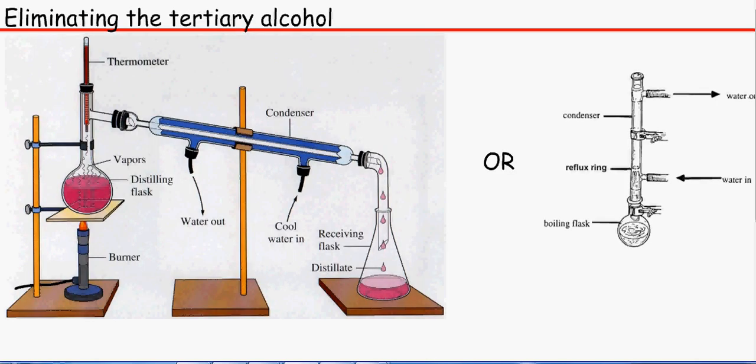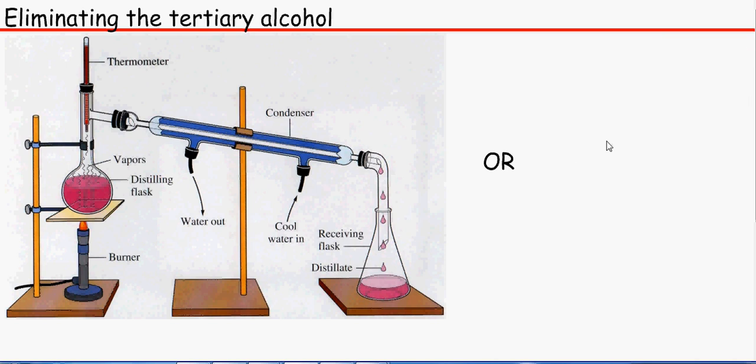So what we should do is for each test tube we should use this distillation apparatus or we could use a reflux but I would suggest that you don't use a reflux apparatus. We know that primary alcohols and secondary alcohols will oxidise and if we put in the oxidising agent, the oxidising agent will change colour because it would be reduced.